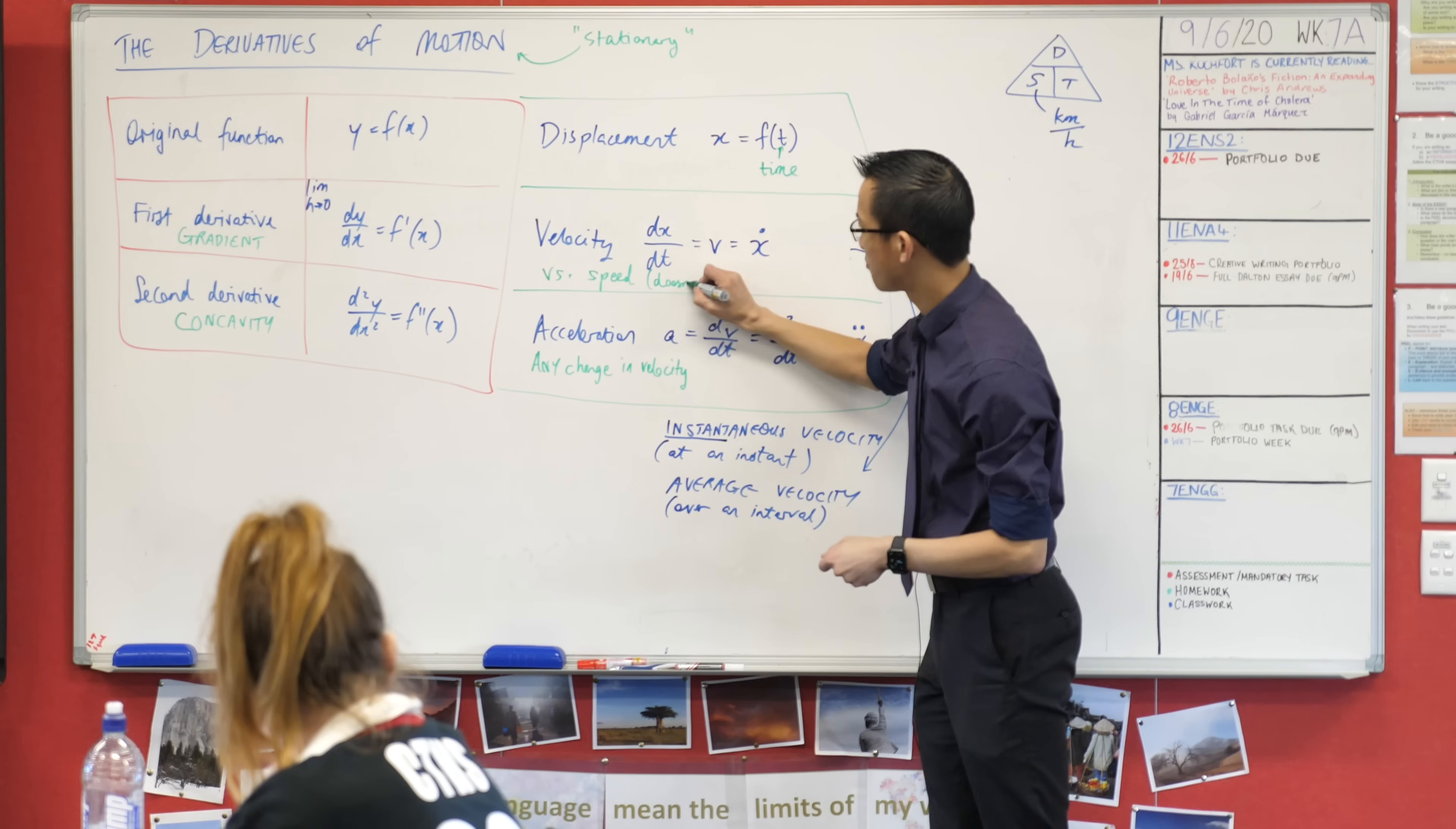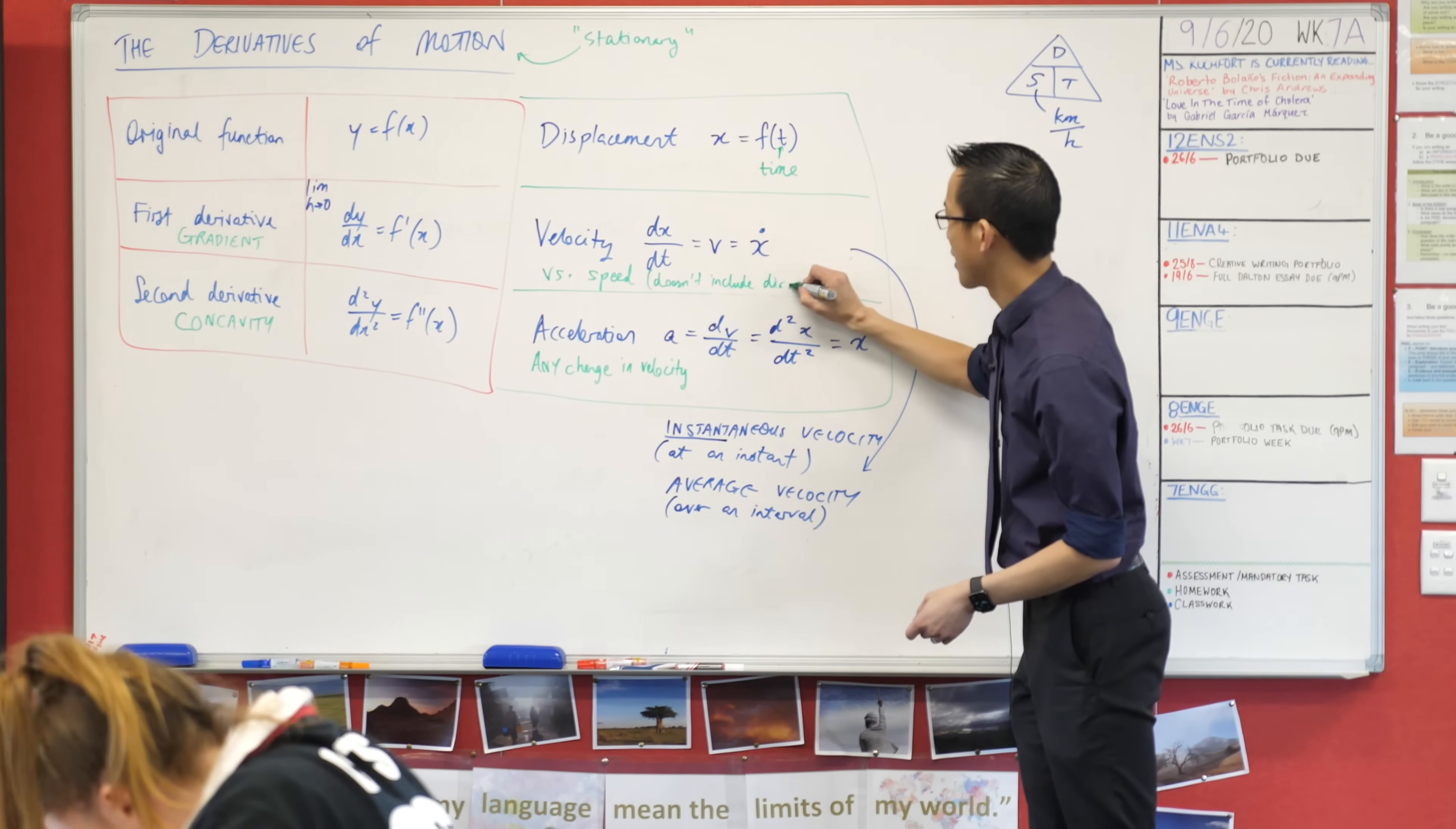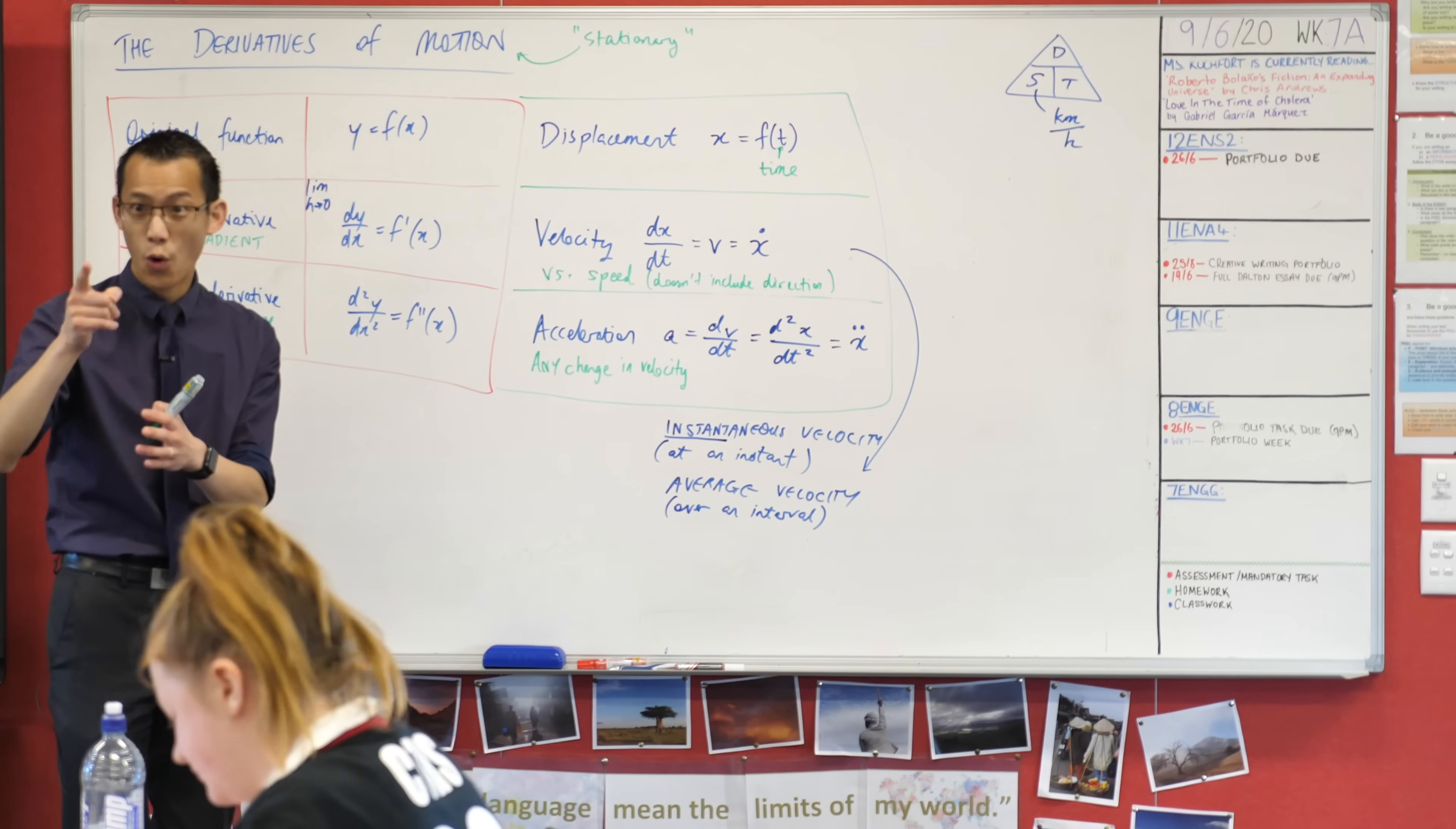Your speedometer doesn't care which way you're going, whether you're going forwards or backwards. So speed doesn't include direction. For the small number of physics people in the room, that's why we call it a scalar quantity - it doesn't include direction.